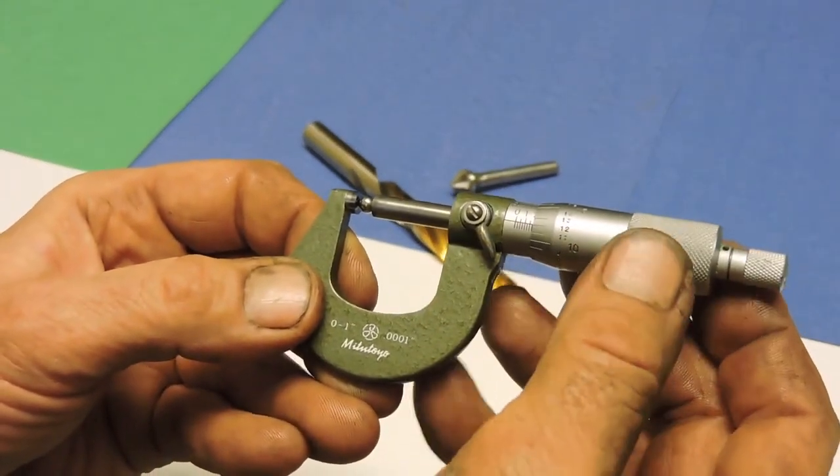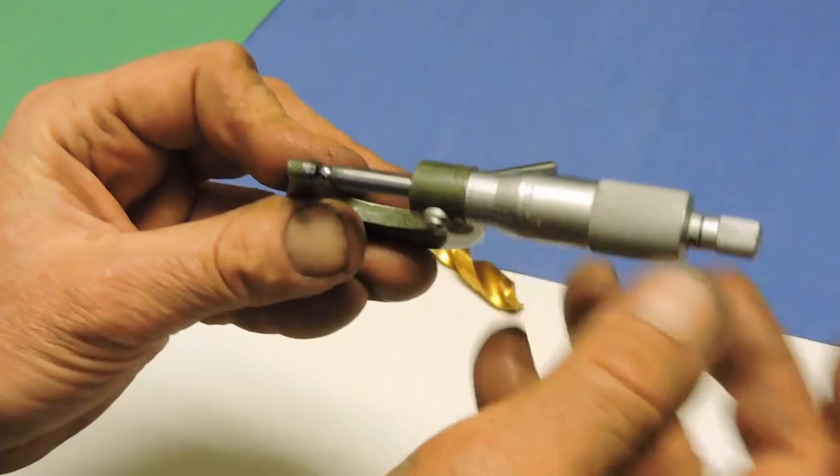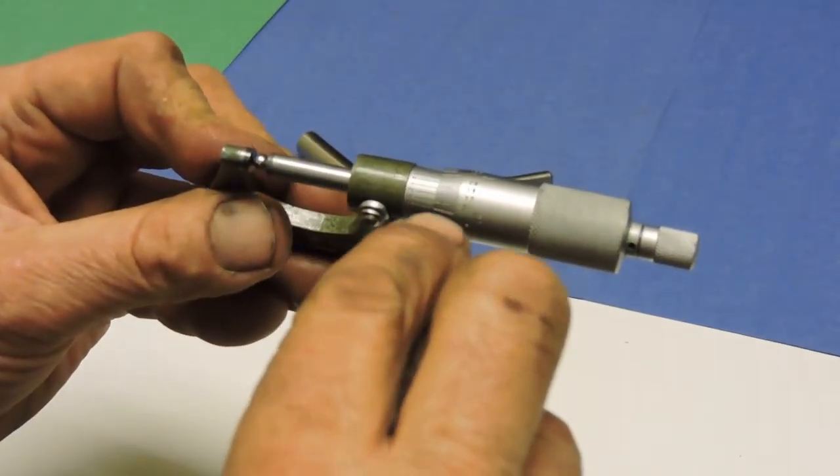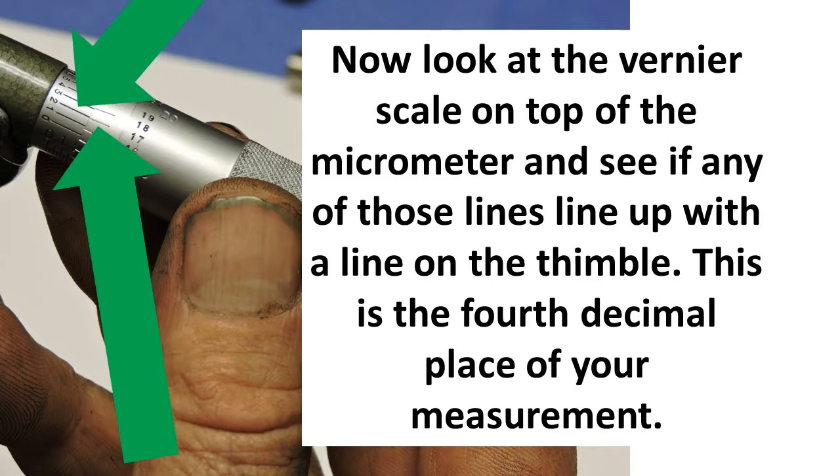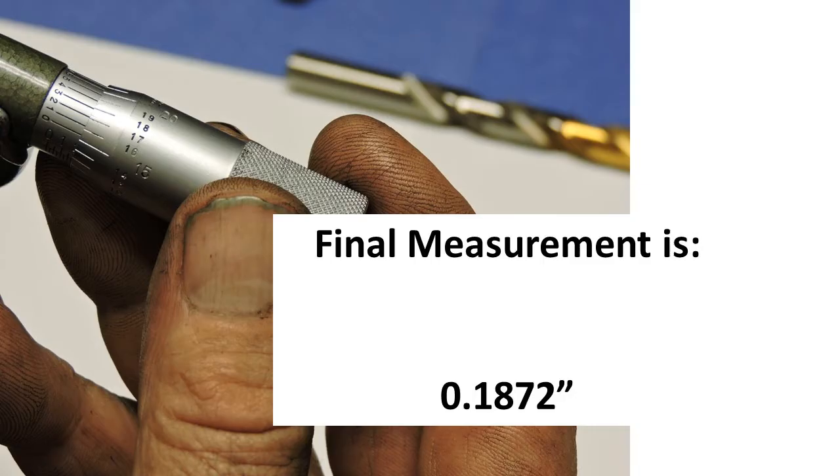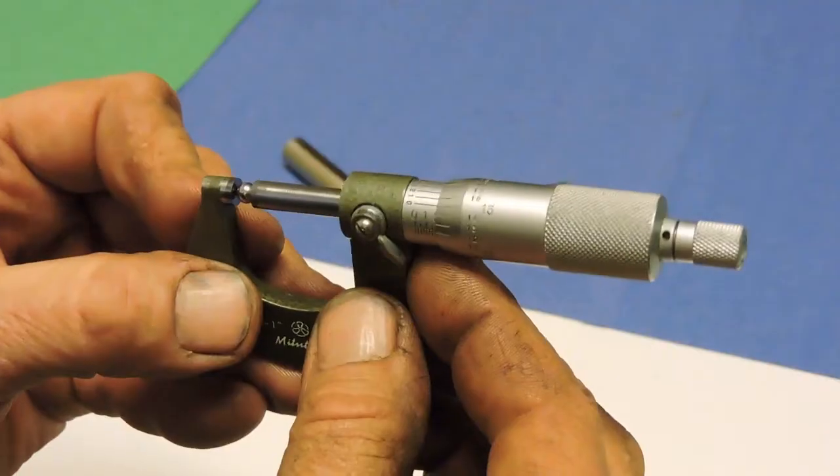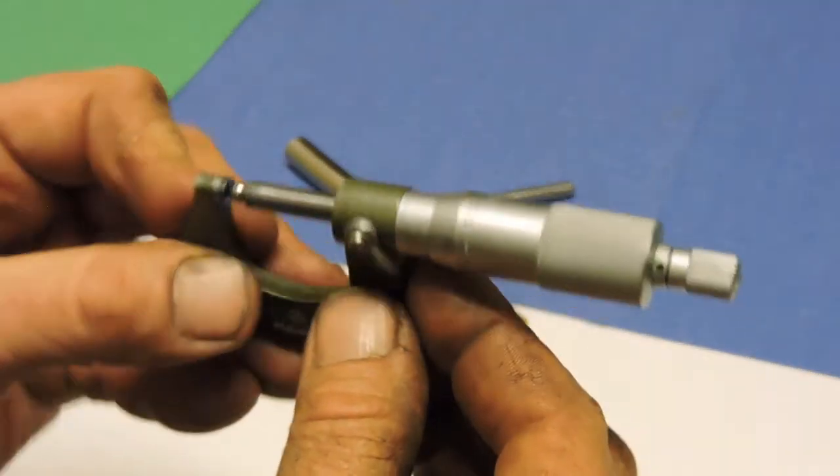If I look over here to the vernier scale, what I'm trying to do is see which lines line up, not looking at the numbers, just looking for the lines to line up. In this case, the two seems to line up with this number here on the thimble, so I would say that's two ten-thousandths of an inch. My final reading in this case would be 0.1872.